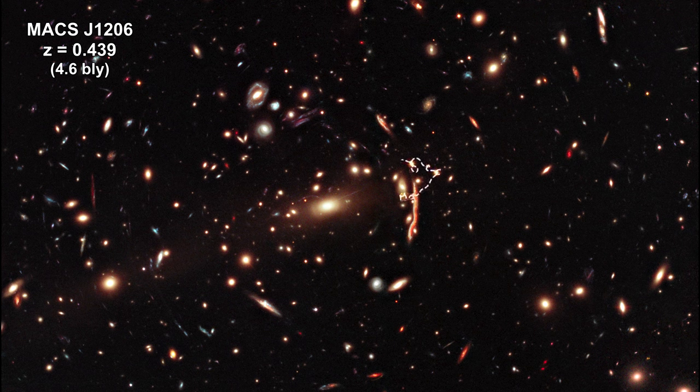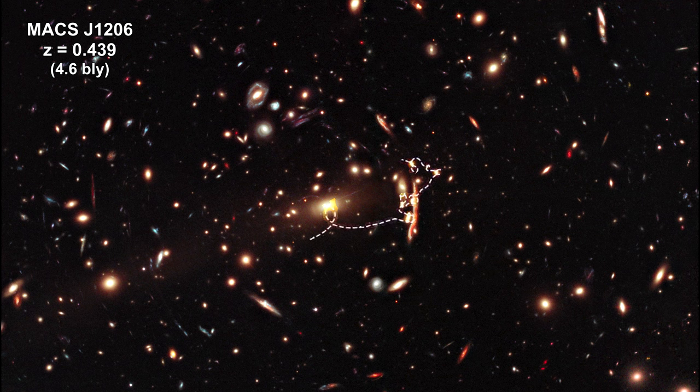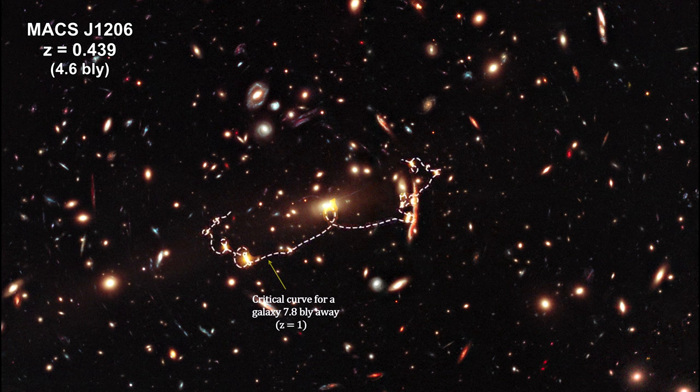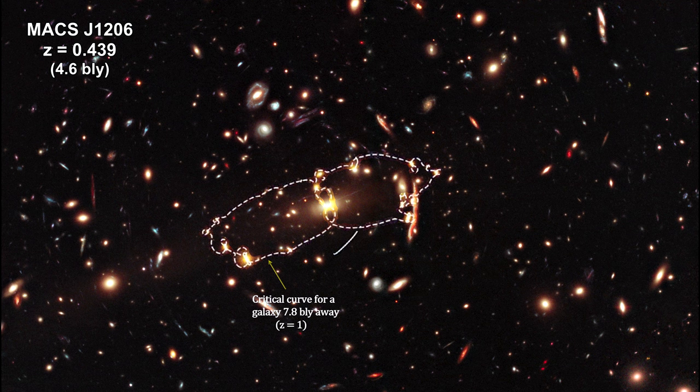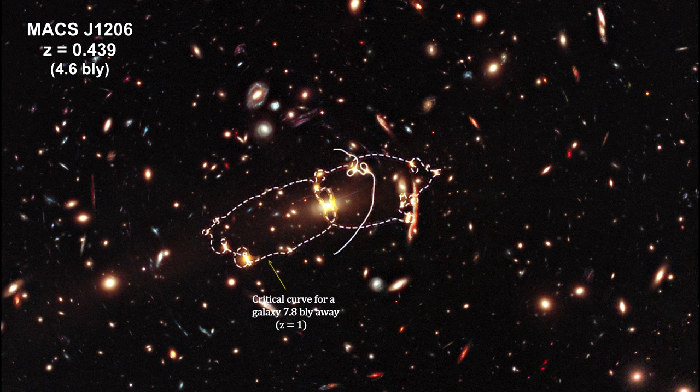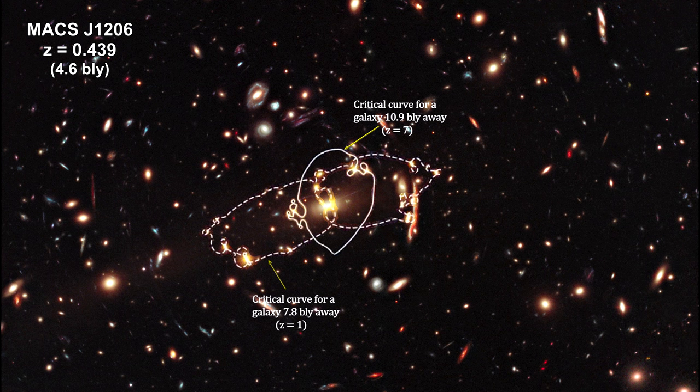This dashed line identifies a calculated critical curve for a galaxy 3.2 billion light-years behind the cluster. This solid line identifies a calculated critical curve for a galaxy 8.3 billion light-years behind the cluster. You can see how the gravitational lens characteristics change with the distance to the far away sources.